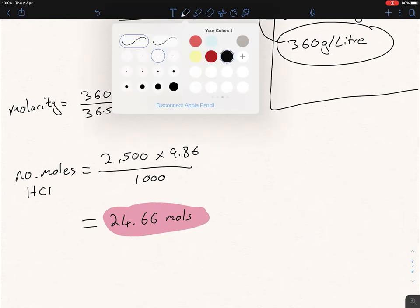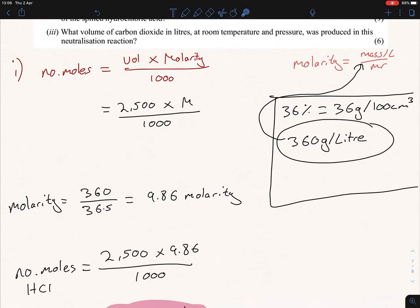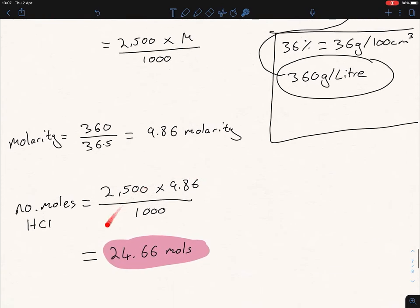So a tiny bit messy there I know. What did we do? We start off using our formula - number of moles is volume times molarity over a thousand. We figured out we have the volume, we have the thousand, we need to figure out what molarity is. So we use that formula: molarity is mass per liter over the Mr. I realized 36 percent equals 36 grams per 100 centimeters cubed. I need to change 100 centimeters cubed into a liter, so I multiplied by 10. I calculate the molarity to be 9.86 moles per liter, and I pop that back up here, and we got 24.66 moles. A little bit messy I know, but that's that part done.